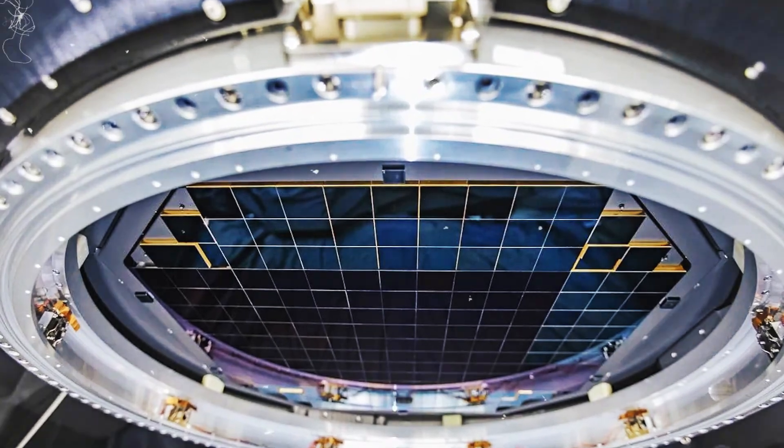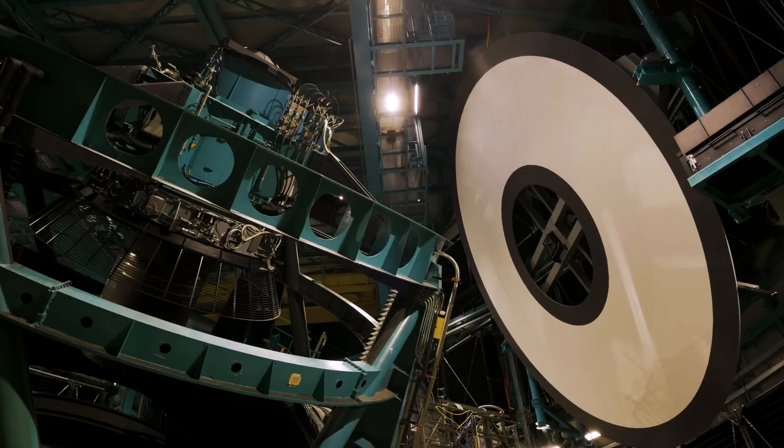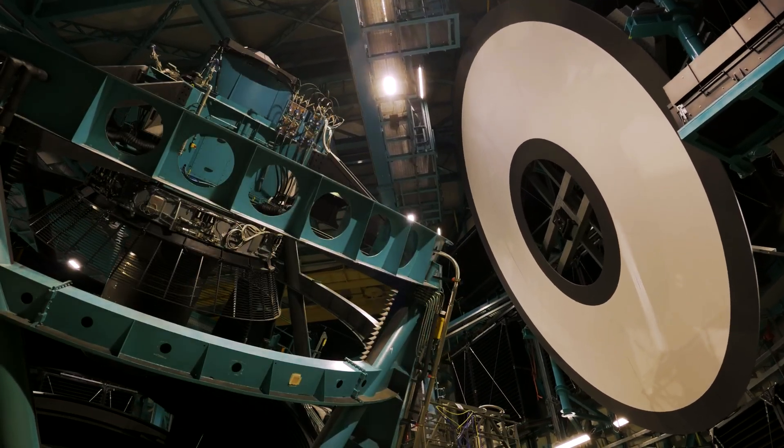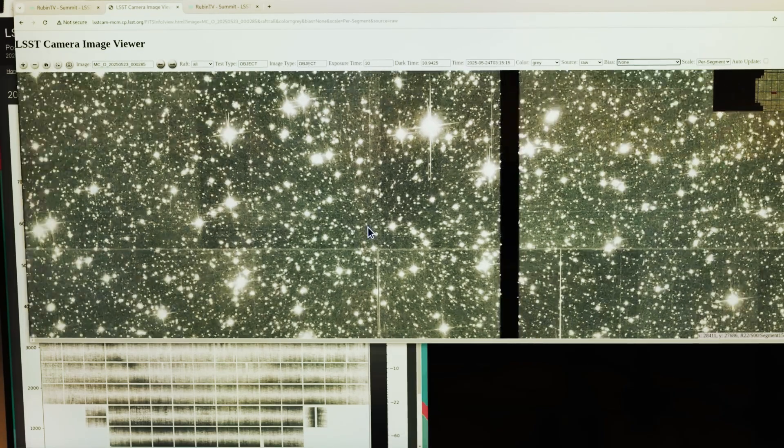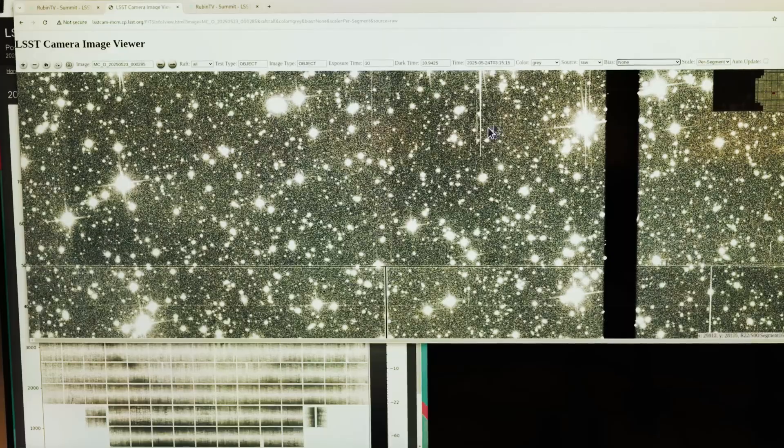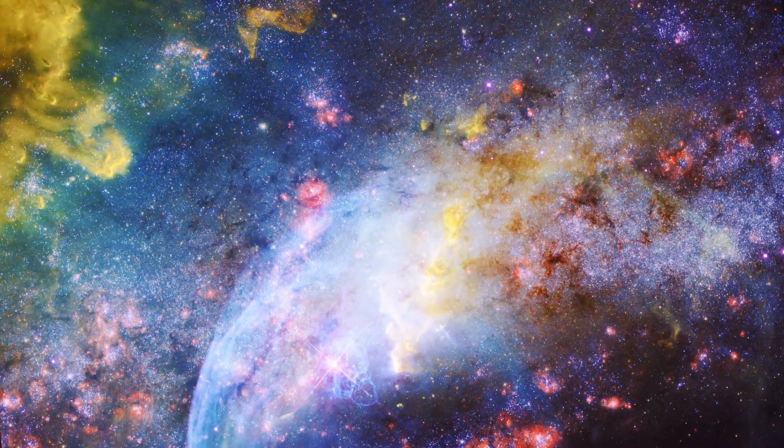From there, the light is focused up to a 3.4 meter secondary mirror, then back down to a 5 meter tertiary mirror, nestled within the primary, before finally entering the camera. It's a three-mirror optical design of breathtaking complexity, all to deliver the widest, sharpest possible view of the sky.